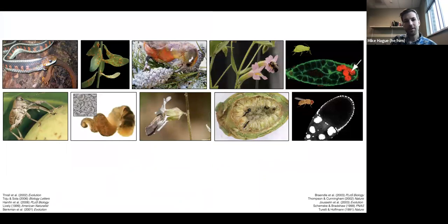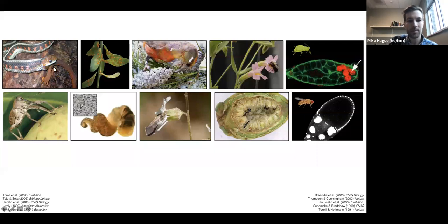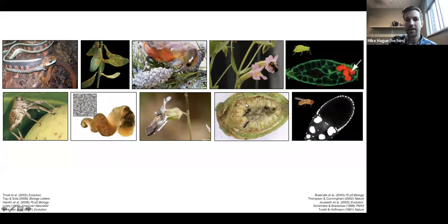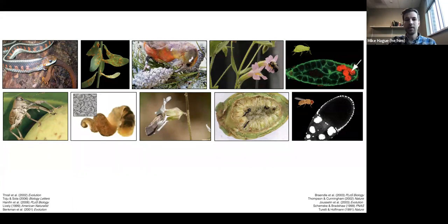Most broadly, I'm really interested in the interactions among species. Here I'm showing you some examples of interactions between species, and they span a continuum from more antagonistic, like between predator and prey or host and pathogen, to more beneficial or mutualisms, like between plant and pollinator or host and endosymbiont. These interactions among species are the fabric that connects ecological communities, and they're thought to be really important drivers of the evolution of biodiversity.